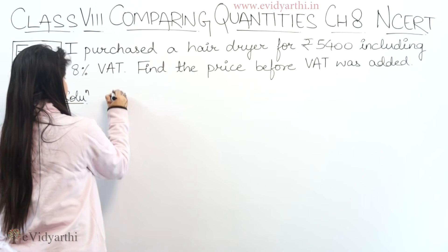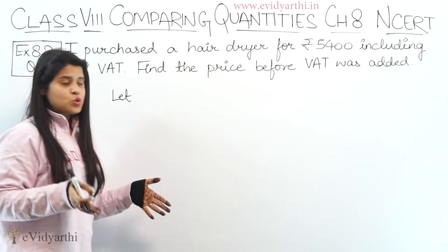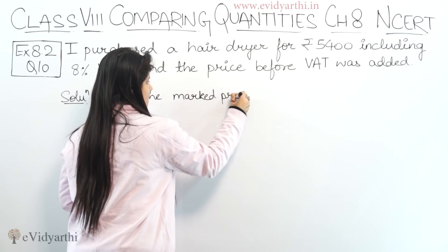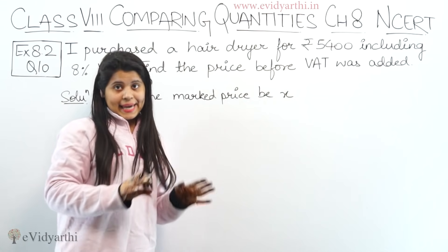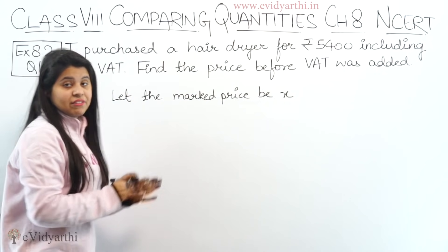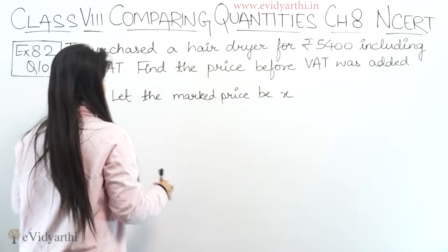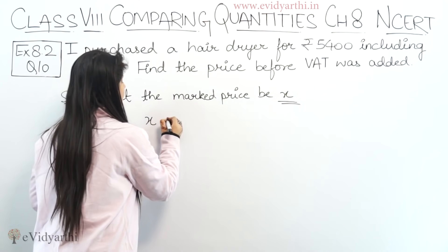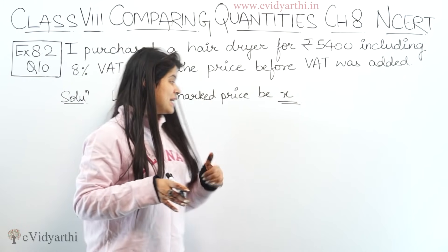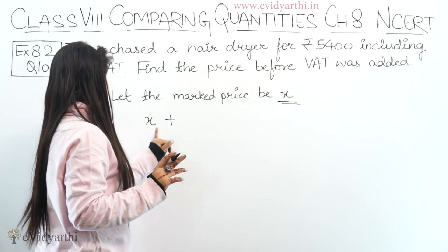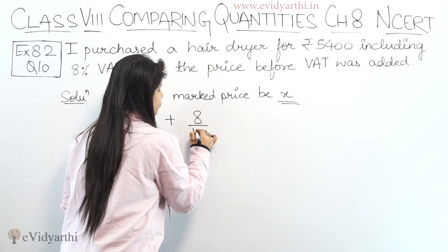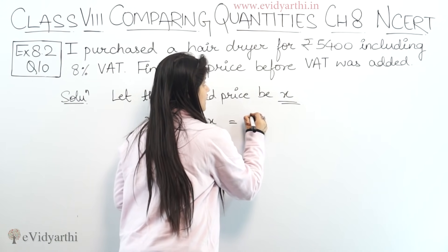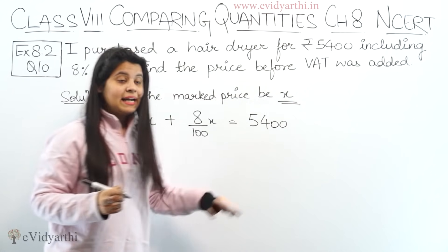Let's do it. Let the marked price or the original price be X. The price we have given is VAT included, so this price means the original price plus tax. The original price is X, so X plus 8% of X equals the selling price we have purchased, that is 5400. This amount is inclusive of VAT.